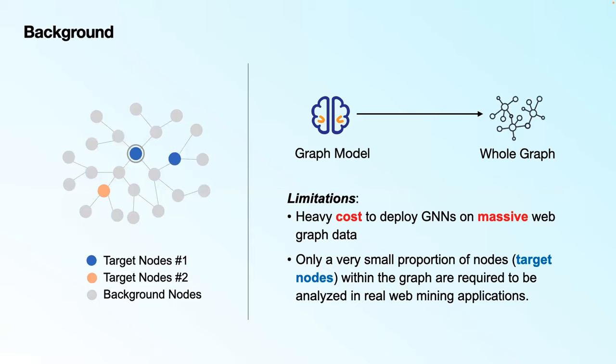And in most of the real applications, only a very small proportion of nodes in the graph actually required to be analyzed. In this case, we term the nodes we want to classify as the target nodes, while the rest of the nodes as the background nodes.